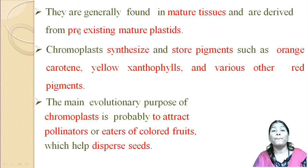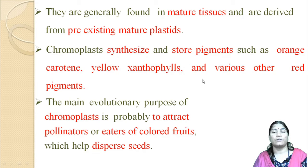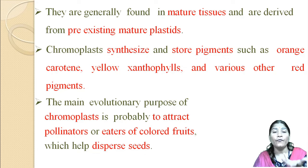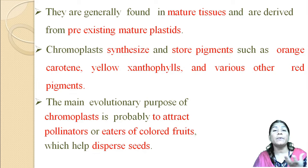Chromoplasts are generally formed in mature tissues and are derived from pre-existing mature plastids. They synthesize and store pigments such as orange carotene, yellow xanthophyll, and various red pigments. The main evolutionary purpose of chromoplasts is probably to attract pollinators or eaters of colorful fruits, and ultimately aid in the dispersion of seeds.